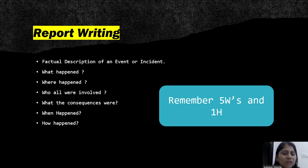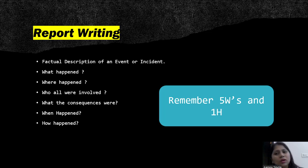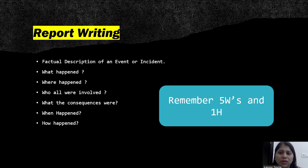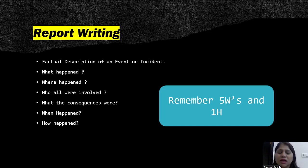You need to remember five W's: where the incident happened, when the event happened, what the event was, who the organizer was, who all were involved, what the consequences and results were, and how it happened. So five W's — what, where, when, who, by whom — and one H for how. If you remember these, half your task is done.